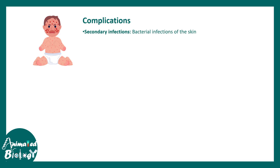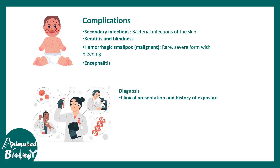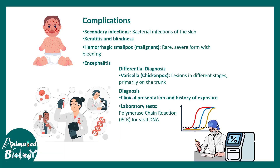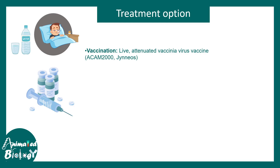Complications include secondary bacterial skin infection, keratitis and blindness; hemorrhagic smallpox is rare but associated with bleeding; encephalitis is extremely rare. Diagnosis is done with clinical history and laboratory tests including PCR or RT-PCR. The key differential from varicella: lesions are at different stages simultaneously in varicella, but all synchronized in variola. Treatment includes hydration; the incidence of smallpox has dramatically decreased due to the smallpox vaccine.